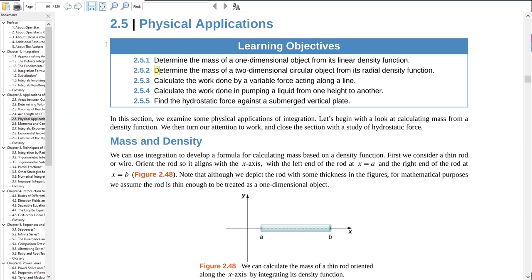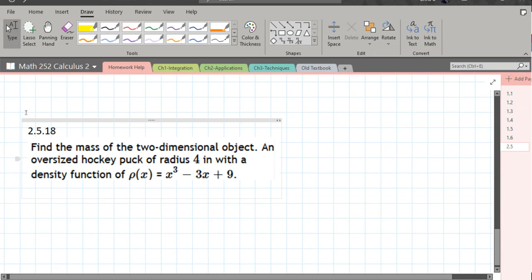We're going to do mass of a two-dimensional circular object from its radial density function. Let's just double check and make sure that's what we're doing here. With a density function, it doesn't say radial density function, but there is the word radius right here.